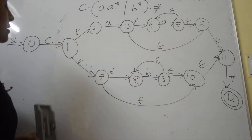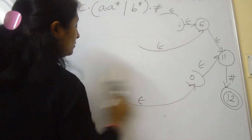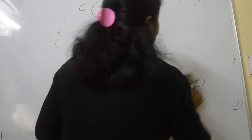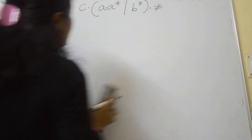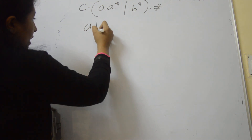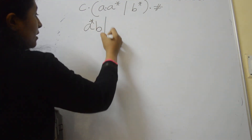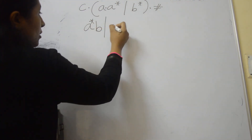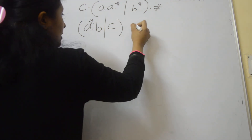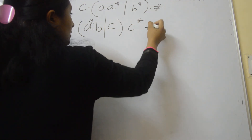You can solve one more example. Try this: A*(B∪C) followed by C*, then hash.